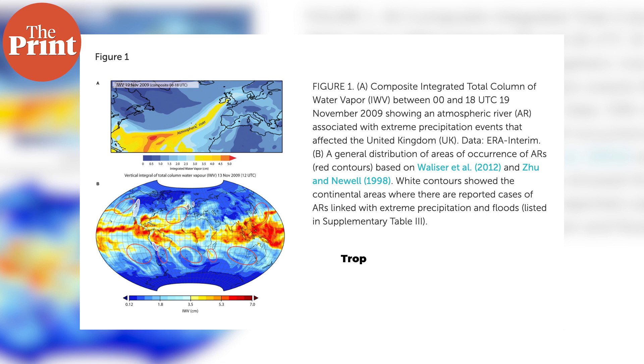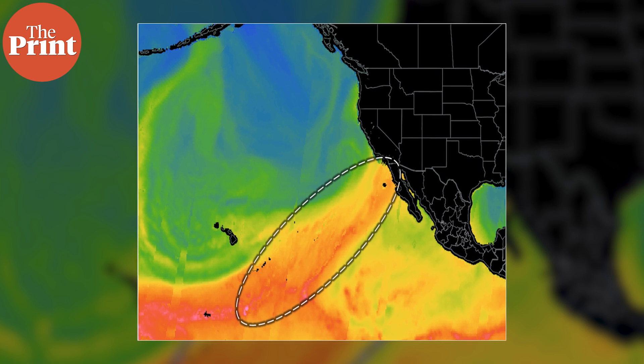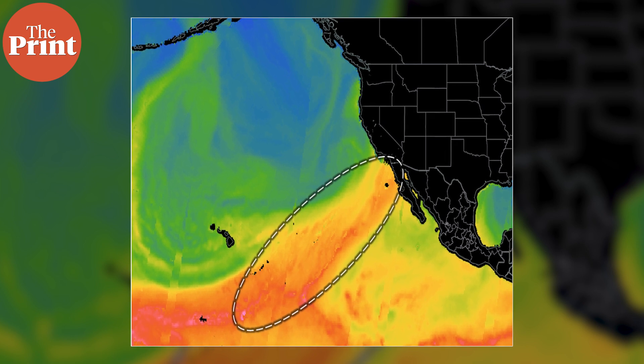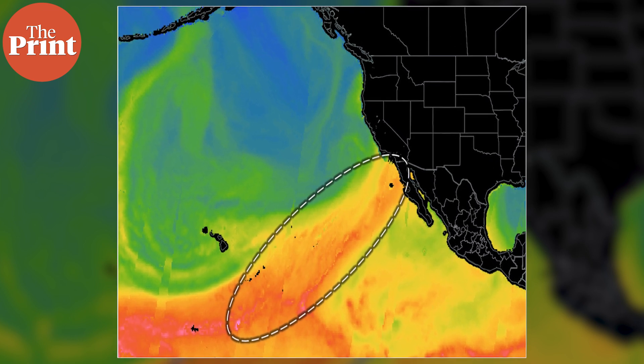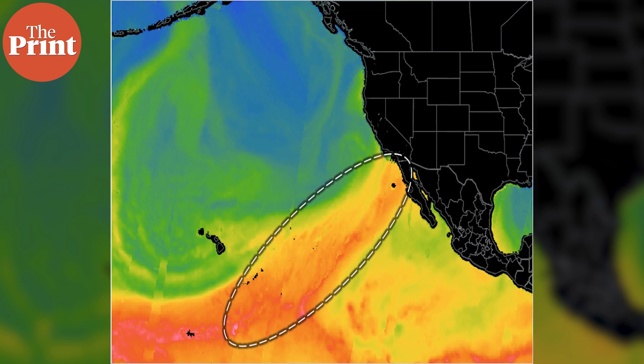He called them tropospheric rivers because of the layer of the atmosphere where they are found. On average, these warm tropical cloud bands carry the same amount of water that flows at the mouth of the Mississippi River, which is one of the largest rivers in the United States.